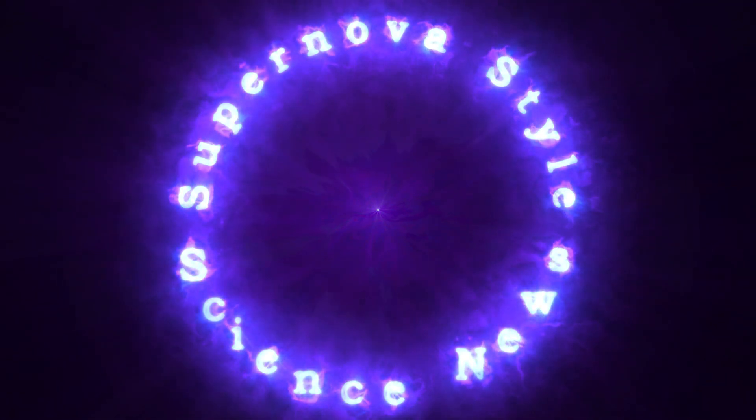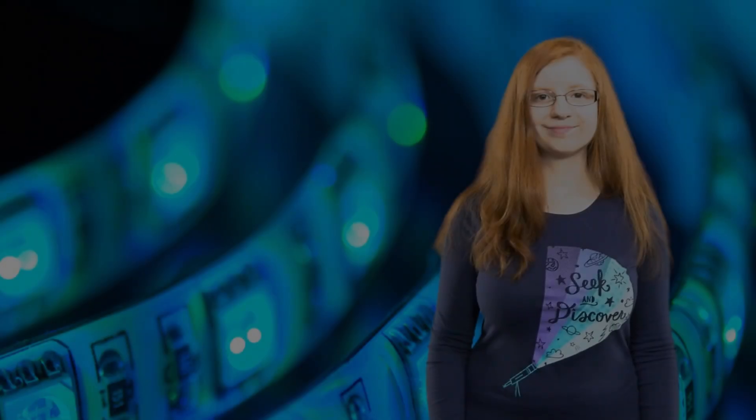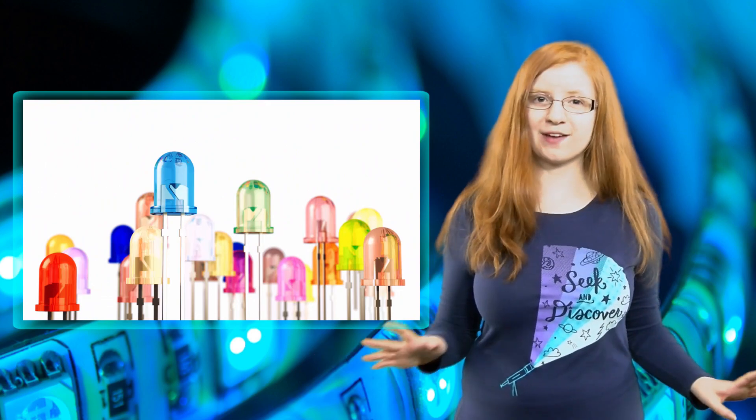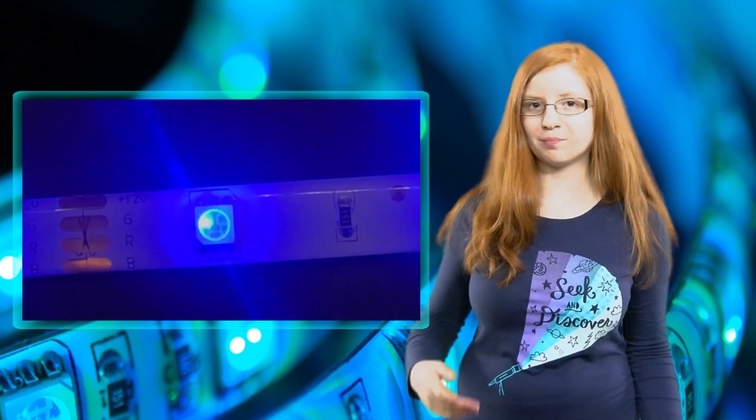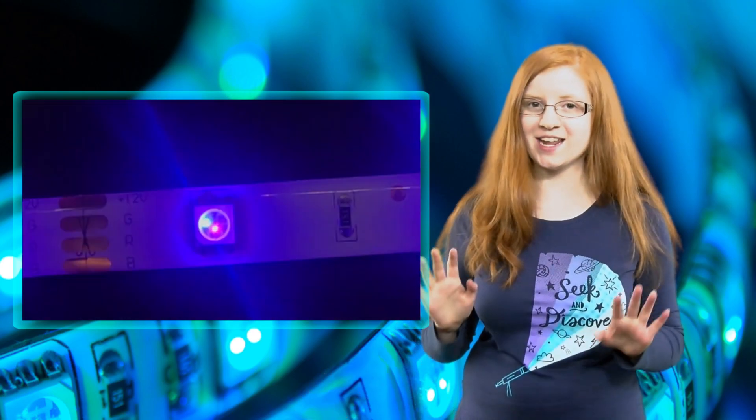Supernova Style Science News with Julie Seven Sage. There are many different kinds of LEDs, or light-emitting diodes, for different colors such as red, green, and blue, and from there we can make any other color.